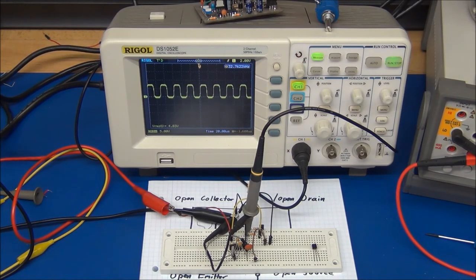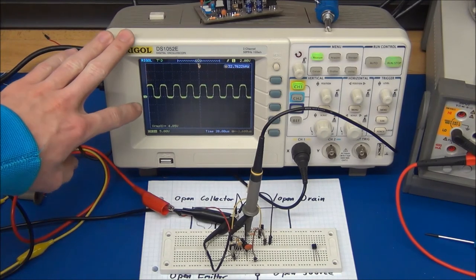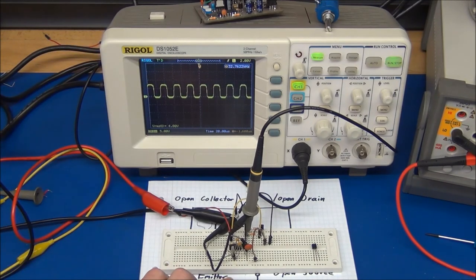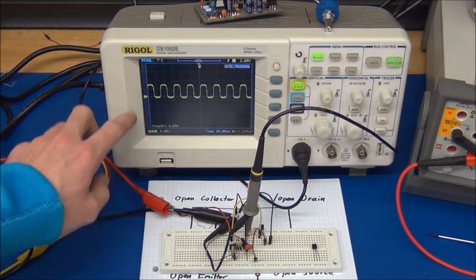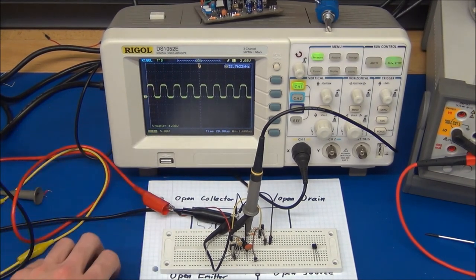And here we are looking at the output of the inverter chip, and you can see it's a nice square wave. So I have put the output of the oscillator into another inverter, so we get a clean square wave output.